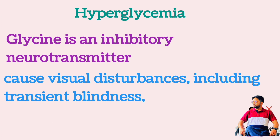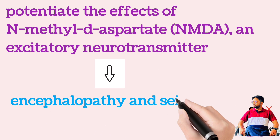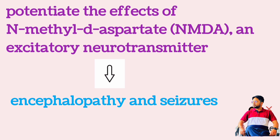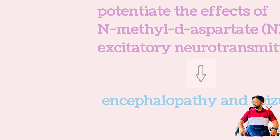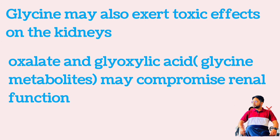Vision usually returns to normal within 24 hours as serum glycine concentration approaches baseline. Glycine may also lead to encephalopathy and seizures through its ability to potentiate the effect of N-methyl-D-aspartate (NMDA), an excitatory neurotransmitter. Glycine may also exert toxic effects on the kidneys; hyperoxaluria due to metabolism of glycine to oxalate and glyoxylic acid may compromise renal function in patients with pre-existing renal disease.